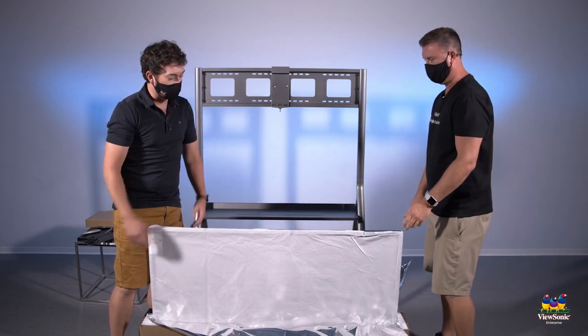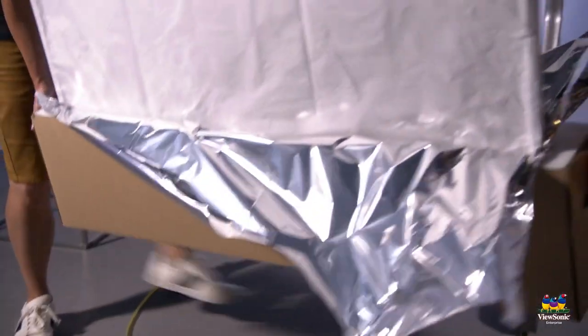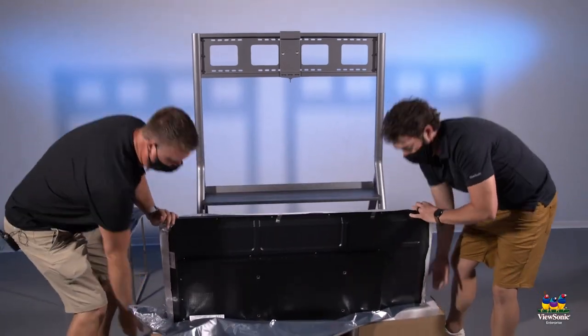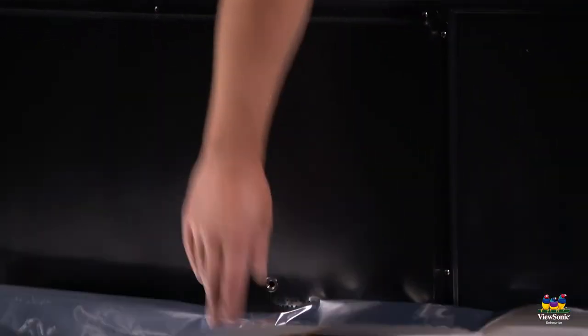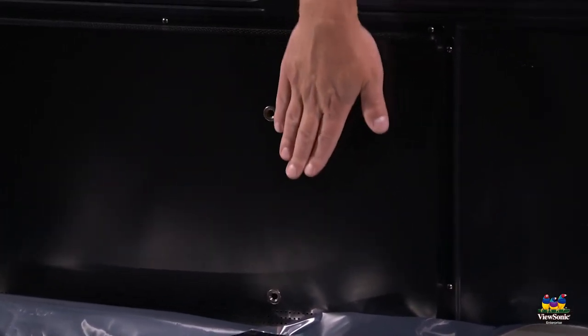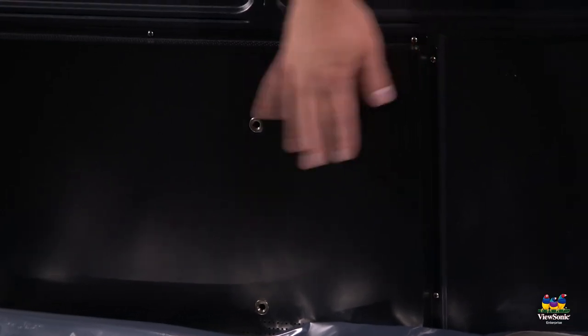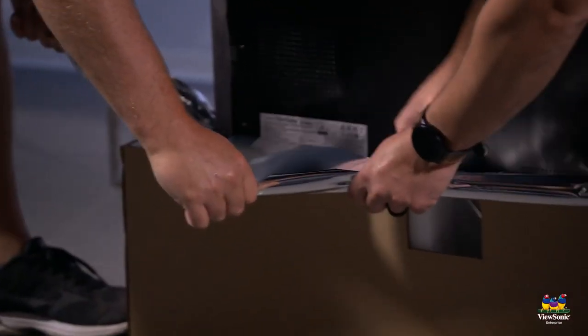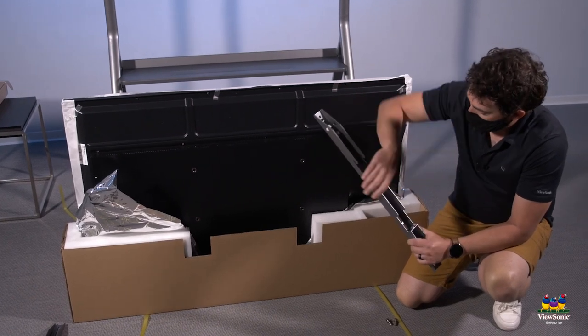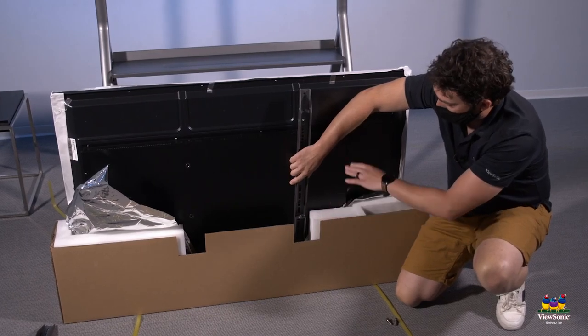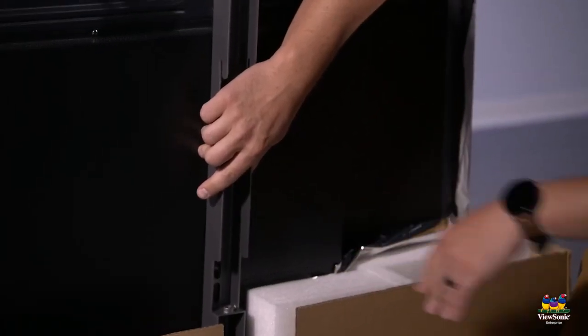You'll notice that by cutting the plastic away we were able to expose the mounts. This will allow us to put the mounts on without removing the panel from the box. Carefully cut away any extra plastic if you need to. Once you're ready, take your mounts and then line them up with the brackets, making sure that all the plastic's clear. When we screw these on we don't want to pinch the plastic against it.